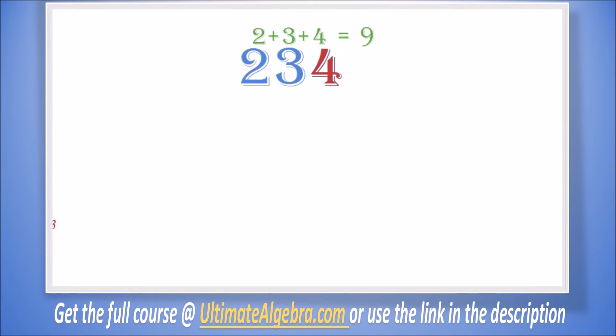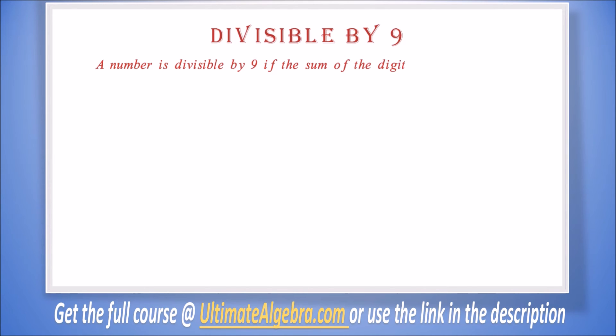Divisible by 9: A number is divisible by 9 if the sum of the digits is divisible by 9. For example, 567 is divisible by 9 because when we add 5 plus 6 plus 7 we get 18, which is divisible by 9.